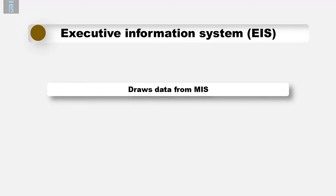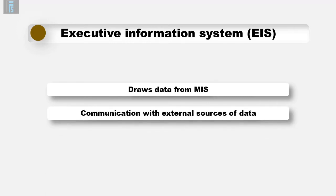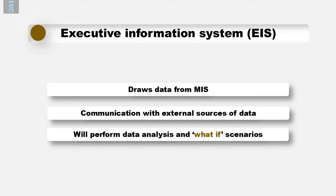The next system worthy of note is called an executive information system, or EIS. This system will typically draw critical strategic information data from an internal management information system and will also allow communication with external sources of information — for example, data from competitors, maybe legislation, market research and maybe databases such as Reuters. An executive information system will typically involve data analysis and modelling tools and is capable of performing what-if analysis to aid strategic decision making.